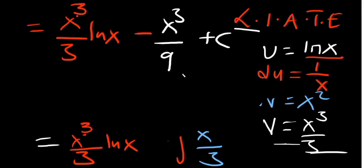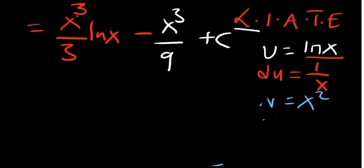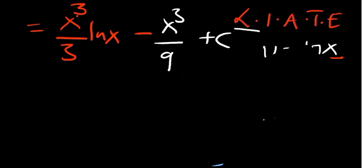So that becomes our answer. That's the way you deal with integration by parts — what is important is to give priority correctly using ARIATE.